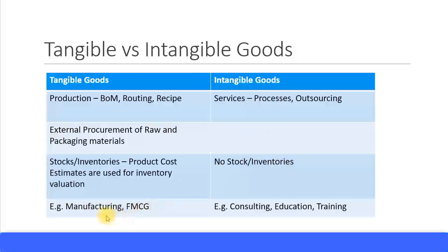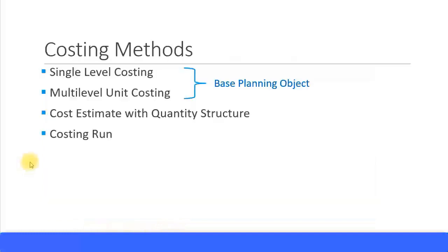Intangible goods are mostly items you cannot see — they are service-oriented — whereas tangible goods are physical products you can see, mostly from manufacturing or fast moving consumer goods. Product costing is only applied for tangible goods. You cannot use product costing effectively for service-based industries, so primarily we use product costing for manufacturing-based industries.